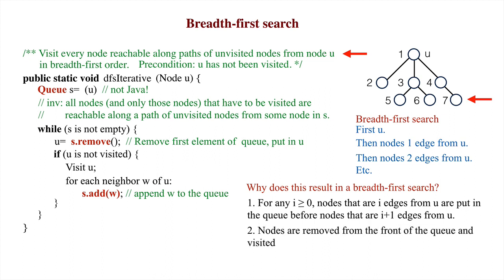Second, nodes are removed from the front of the queue and visited, if not yet visited, so those closer to U are visited first.